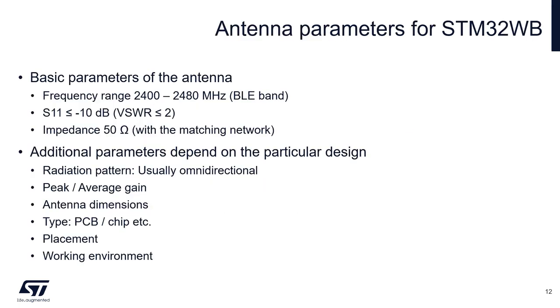The antenna for STM32WB should have the following parameters: frequency range which is the range of Bluetooth Low Energy band. To have good parameters, S11 or return loss should be lower than minus 10 dB within the band. Impedance with a matching network around 50 ohms. Other parameters depend on the particular design, for example radiation pattern, antenna dimensions, antenna type, PCB or chip placement, and working environment.